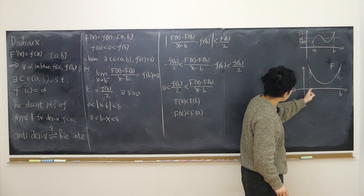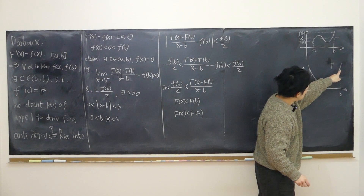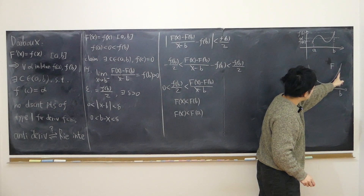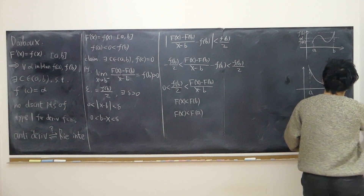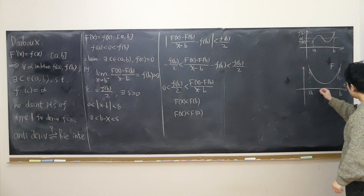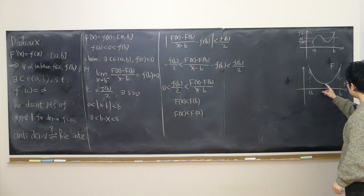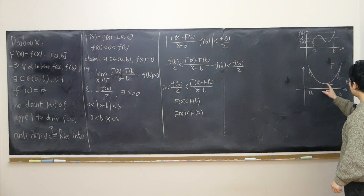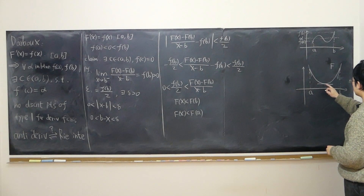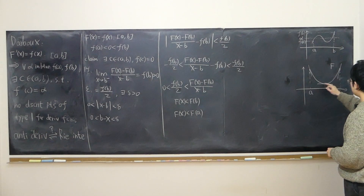The minimum value cannot be F(b), because just nearby b, there are already functional values smaller than F(b). Near the neighborhood of a, there are already functional values smaller than F(a). So obviously there is some point — at least one — where the slope of the tangent line has to equal zero, meaning little f(c) = 0 at some interior point c. But we still have to write it down rigorously.